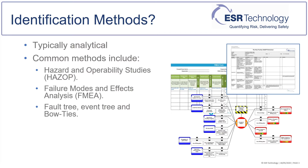Identification methods are typically analytical, but not exclusively. Common methods for identifying scenarios are Hazard and Operability, HAZOP, studies, where a series of what-if questions are posed to a team to determine if a specific cause or failure can result in hazards, and if so, what safeguards are available to prevent any significant consequences.